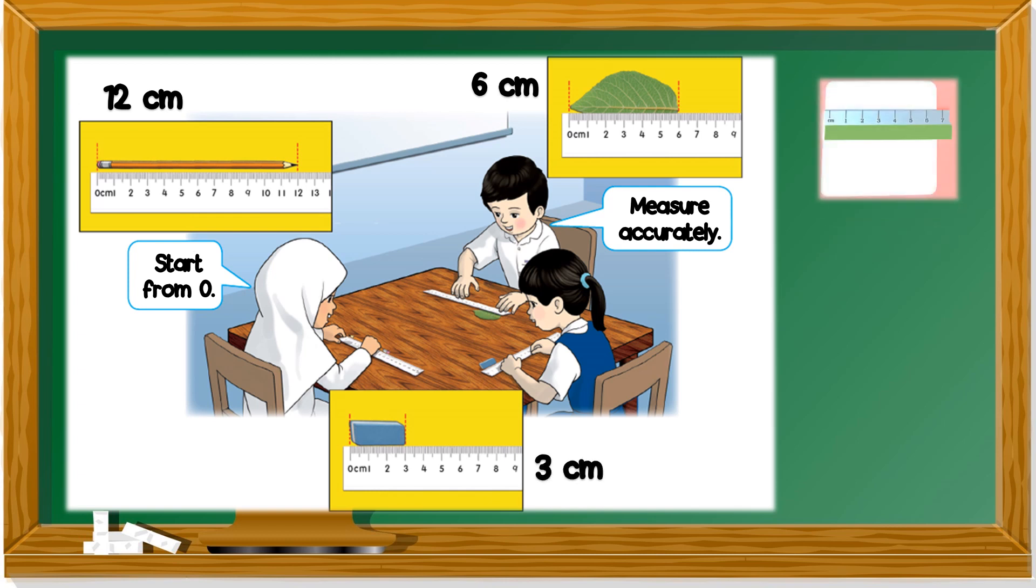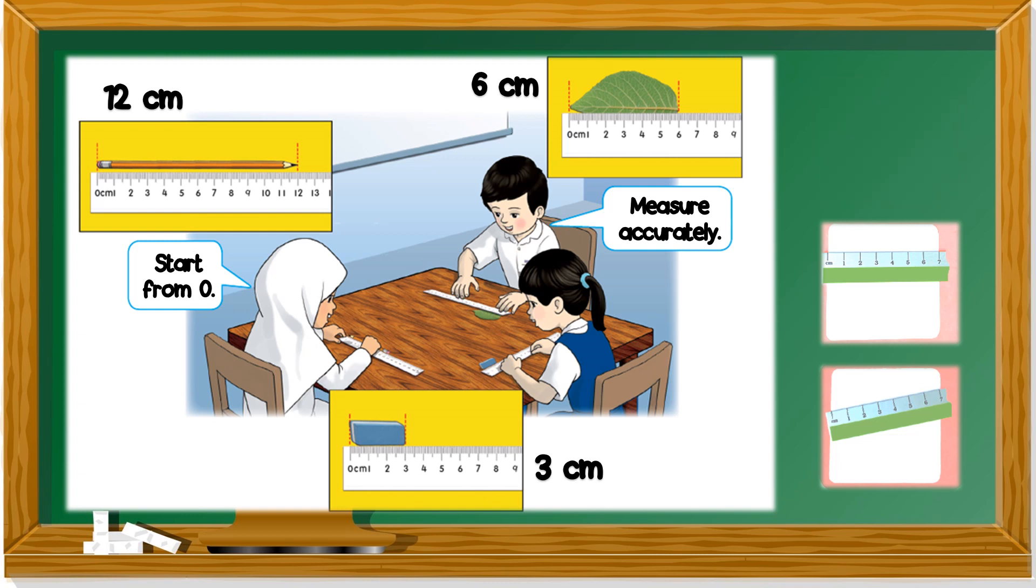So when you measure, how should you measure? Which one? Remember you need to start from zero and your ruler must be straight. So the correct picture is, is this the correct picture? No, because it didn't start from zero. The zero is here, but the paper is outside zero. So this is wrong. Is this correct? Yes, it's correct. The ruler is straight.